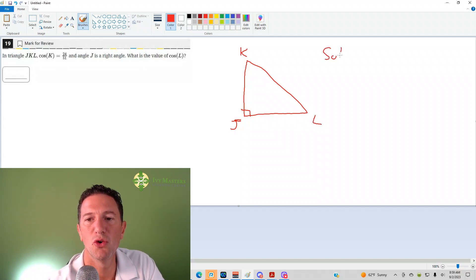Cosine of K, remember, SOHCAHTOA. So we're looking here, it's a cosine, which is adjacent over hypotenuse.